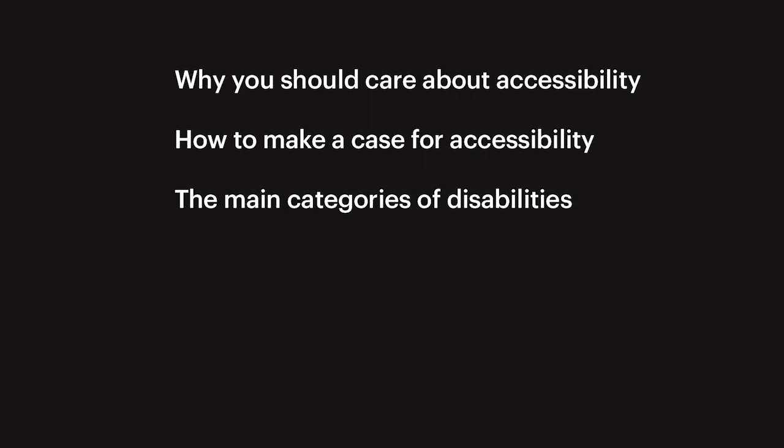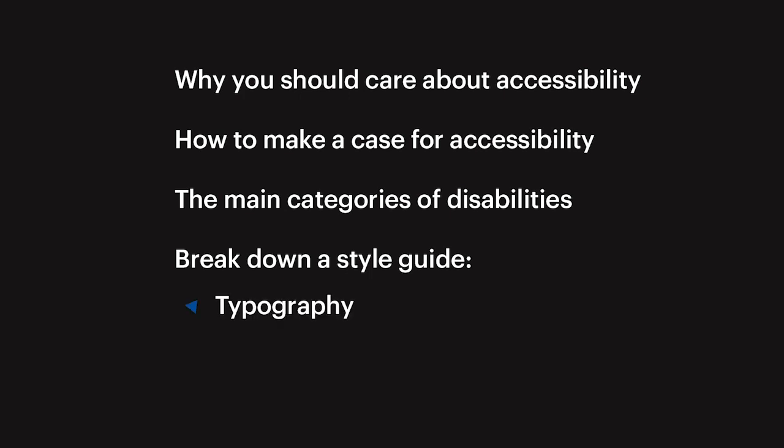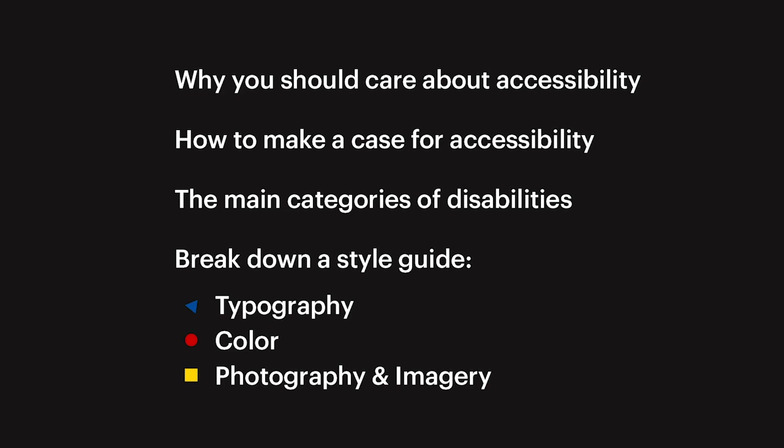We'll cover the main categories of disabilities, as well as breaking down a style guide into its constituent parts of typography, color, and photography and imagery. We'll look at the common mistakes made that make the web inaccessible, and cover how to fix those mistakes so that you can start affecting your next style guide or website project. I've also included a checklist you can run against for your next project in the resources section. So let's get started!